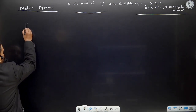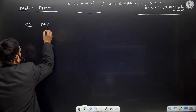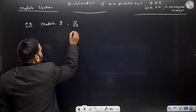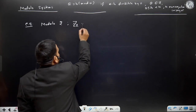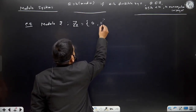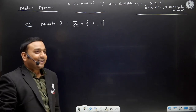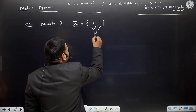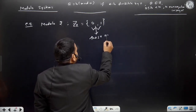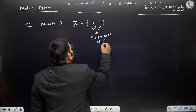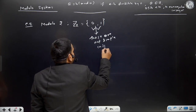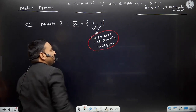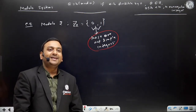Now when you talk about modulos, let's take an example. If you talk about modulo 2, it is represented by Z2. Inside it, the elements you write are 0 and 1. Now understand what 'breaking the illusion' means. These are not simple integers - these are NOT simple integers.